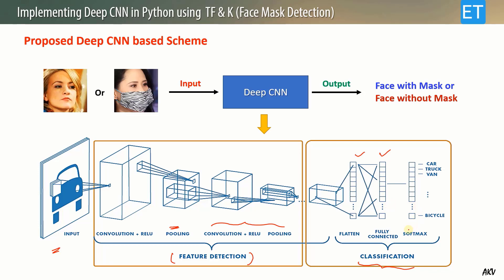At the end, we apply softmax activation and get confidence values category-wise as the result. This is the generalized structure of the deep CNN we are going to implement in this video.